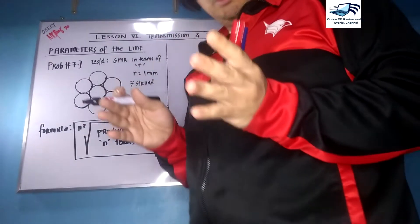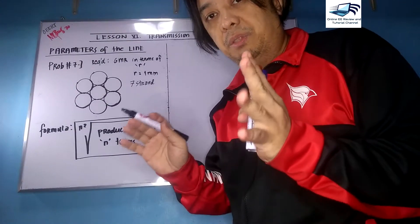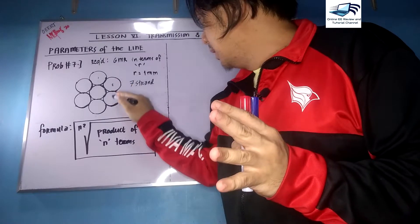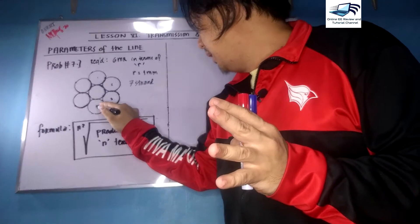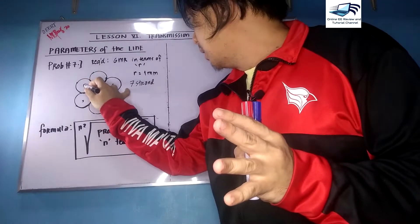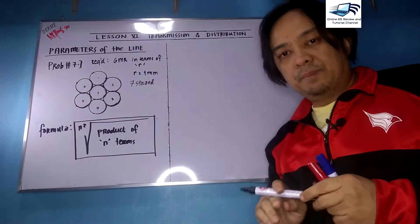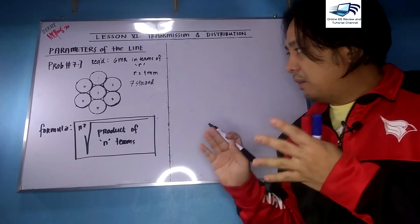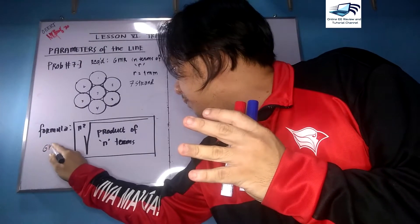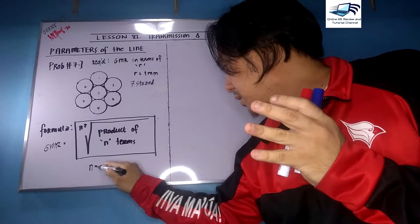In order to analyze this, we need to number all of the individual strands. Let's say this is one, two, three, four, five, six, seven. We have here a formula for your GMR — this is a recall formula — where n is the number of strands.